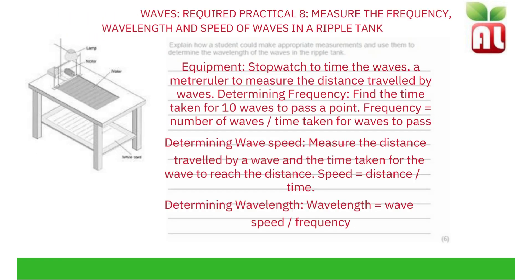Measuring the frequency, wavelength and speed of waves in a ripple tank — required practical. Using a ripple tank, explain how a student could make appropriate measurements and use them to determine the wavelength of the waves. The equipment required is a stopwatch to time the waves and a meter ruler to measure the distance travelled. To determine frequency, find the time taken for 10 waves to pass a point; frequency equals number of waves divided by the time taken. To determine wave speed, measure the distance travelled and the time taken, then use speed equals distance divided by time. Use these to determine wavelength: wavelength equals wave speed divided by frequency.